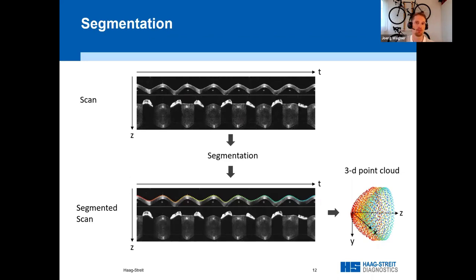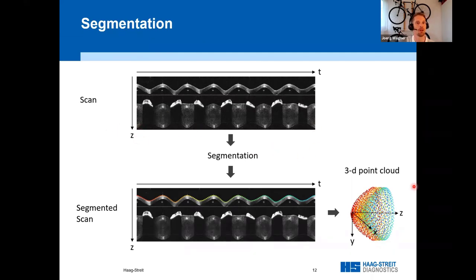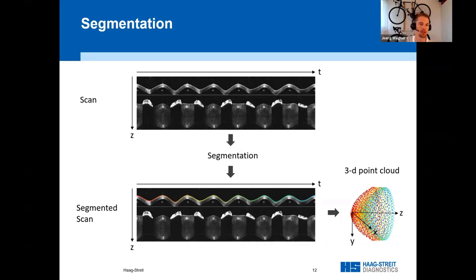The scanning of the eye is followed by the segmentation of the scans, which determines the axial position of the cornea in the scan. In the upper image, we see the original scan, and in the lower image, the same scan with the front of the cornea identified. Together with the known scan coordinates, this allows the creation of a three-dimensional point cloud. But due to eye movement, the points of the cloud are not on one surface — here illustrated is a point cloud from an eye with movement in the Z direction.